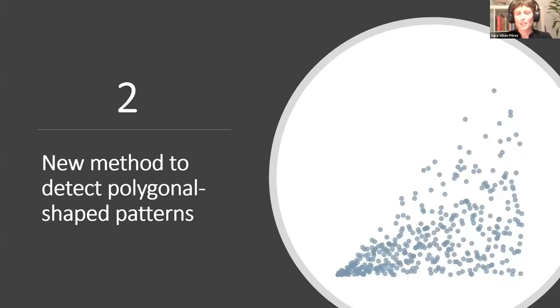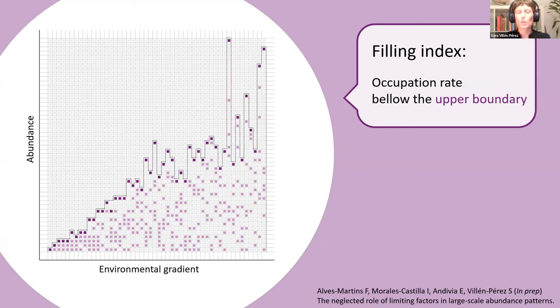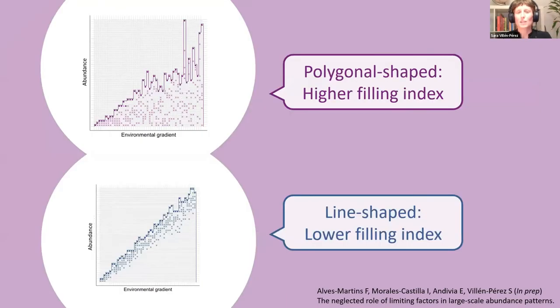To help in this sense, we developed a new method to detect polygonal-shaped patterns. The idea is very simple. We call it the filling index. What we do is rasterize our point cloud. We identify cells where there is a data point, and we also identify the upper boundary. Then we calculate the occupation rate below the upper boundary, assuming that polygonal-shaped patterns will have a higher filling index than line-shaped patterns.